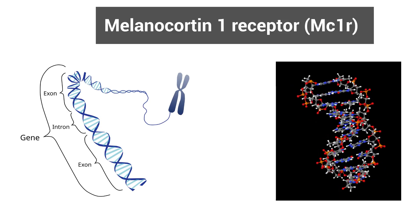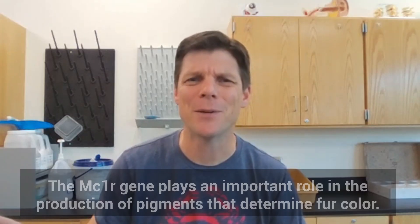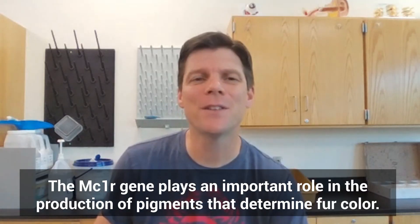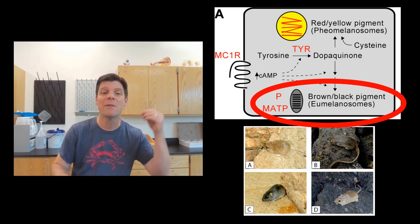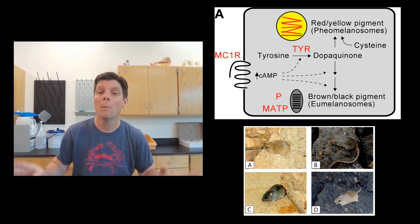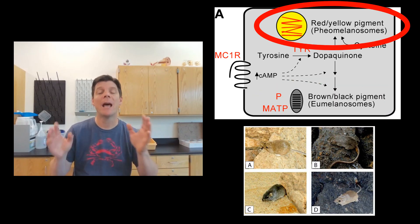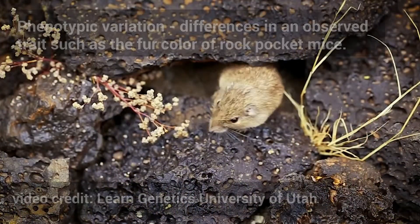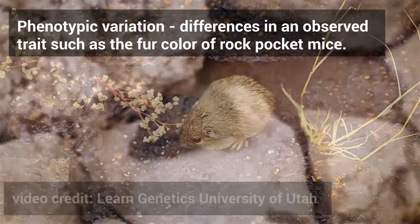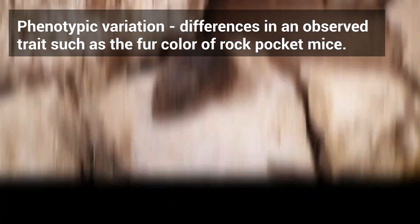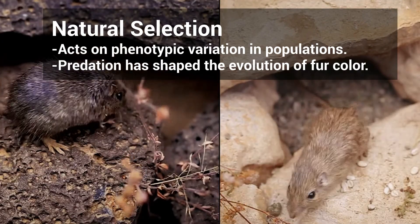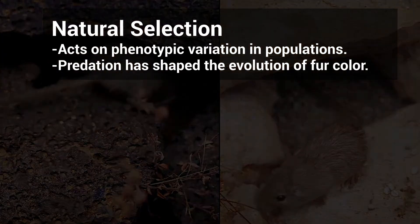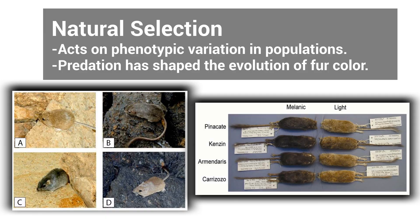Variation in the melanocortin-1 receptor gene — but let's just call it MC1R — leads to differences in the type and amount of pigment molecules that result in differences in fur color. Production of eumelanin leads to mice having darker fur color, while mice whose cells produce phaomelanin have a much lighter colored coat. The term phenotypic variation refers to the variation of an observed trait, such as fur color. Different versions of the MC1R gene lead to differences in fur color, and this has proved to be an incredibly important factor in the evolution of rock pocket mice.